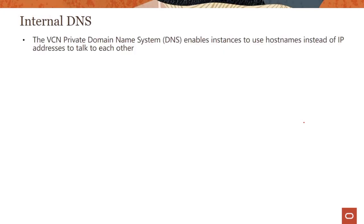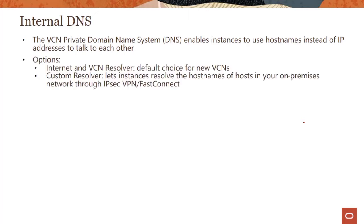What is internal DNS? The VCN private Domain Name System — DNS — or internal DNS enables instances to use host names instead of private IP addresses to talk to each other. There are two kinds of options available. One is called the Internet and VCN Resolver, which is the default choice for new VCNs. If you don't do anything, you would be using this kind of internal DNS resolver.